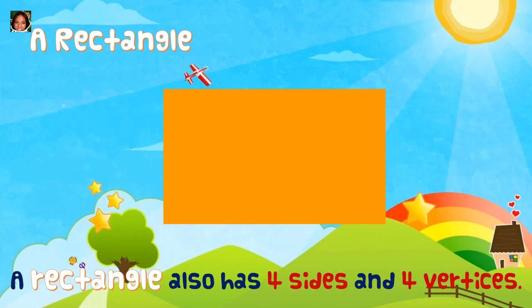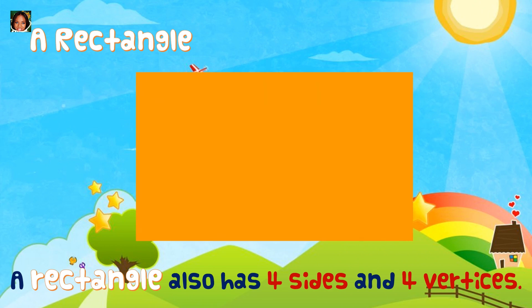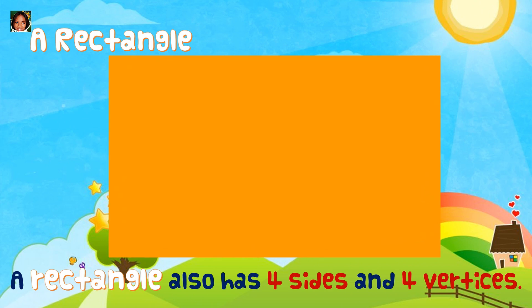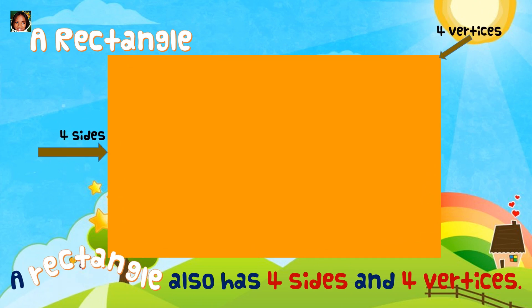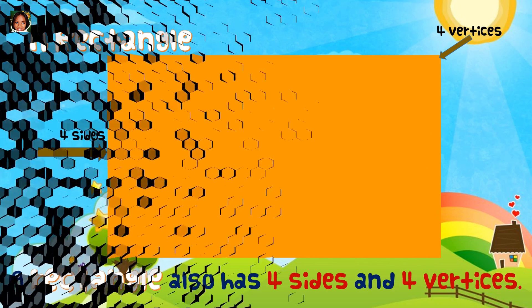Rectangle. A rectangle also has four sides and four vertices.